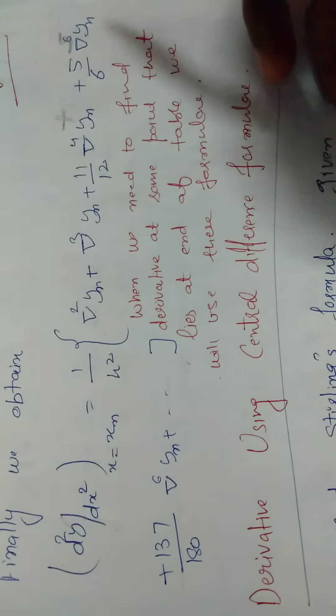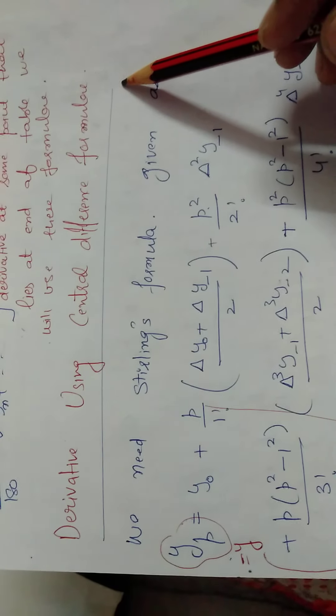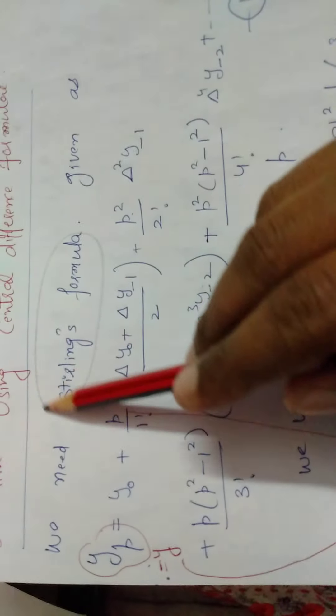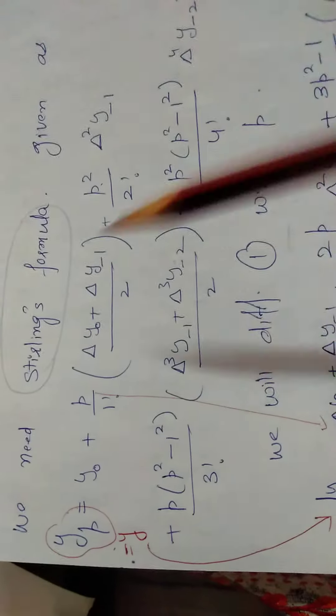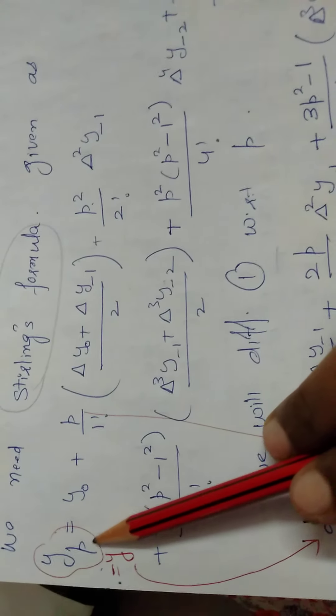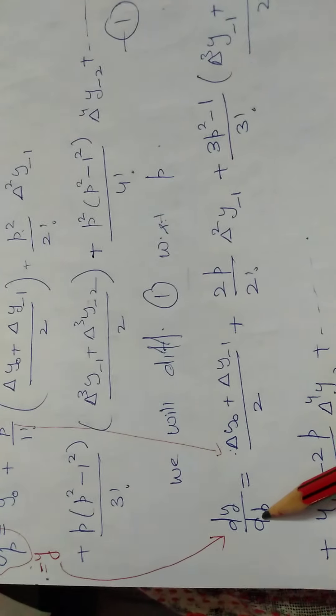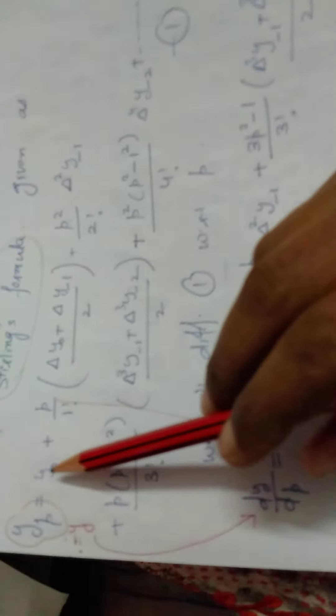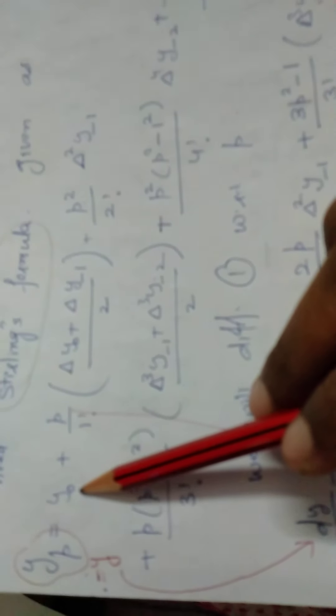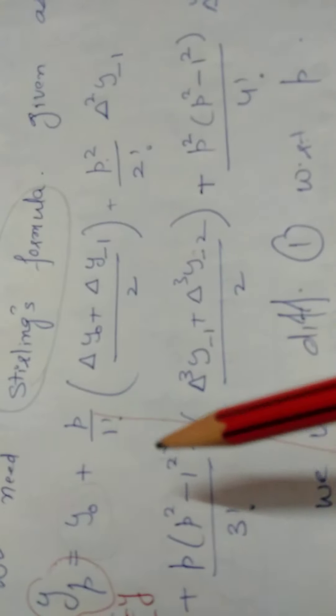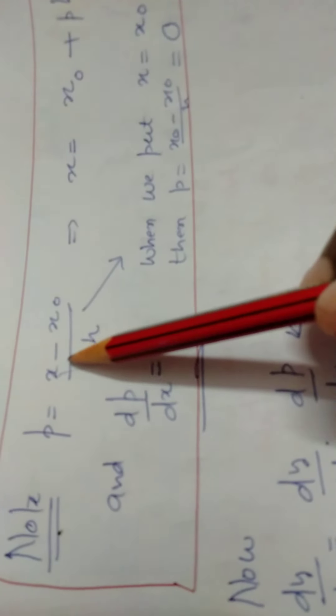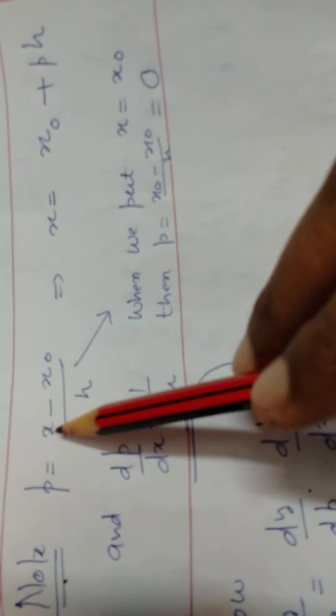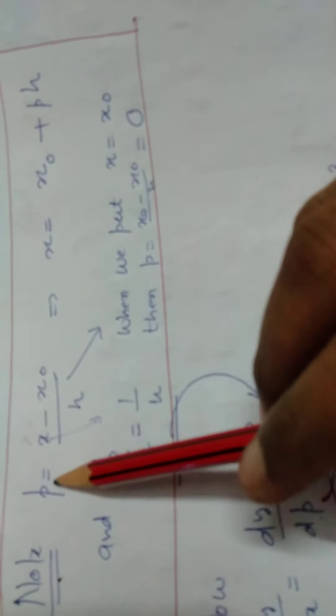Next is the central difference formula, so we remember the Sterling formula. This is the derivation we are doing, Sterling formula. Process is the same - we differentiate this formula with respect to p, where derivative of p is 1, derivative of this p is 0. Here p, derivative of 2p by 2 factorial, wherever these factors are found.